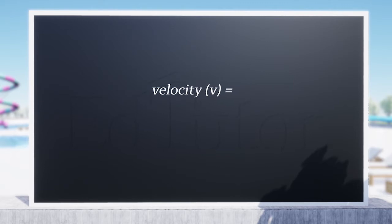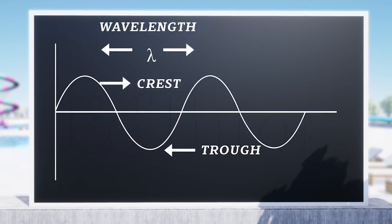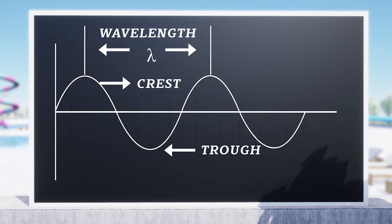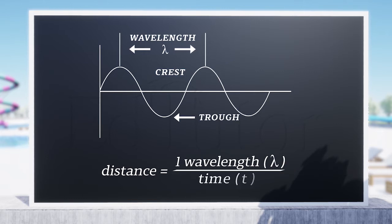As mentioned, the velocity of a wave is the distance it travels divided by time. However, the distance covered by a wave is measured in wavelength, which is the distance between two consecutive crests or troughs known as lambda. So the distance covered by the wave will be equal to one wavelength lambda divided by time t.